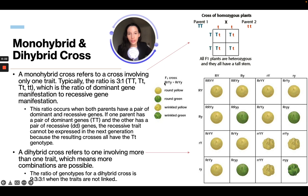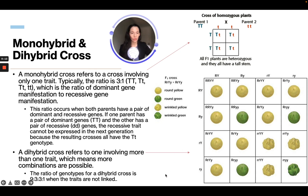Wrinkled is the small r, round is the large R, yellow is the large Y, and green is the lowercase y. Round starts with R so round is the dominant trait, wrinkled is recessive, yellow is dominant, and green is recessive. In this ratio we would see nine round yellow plants, three round green plants, three wrinkled yellow plants, and one wrinkled green plant — which you can actually count out in the cross shown here.